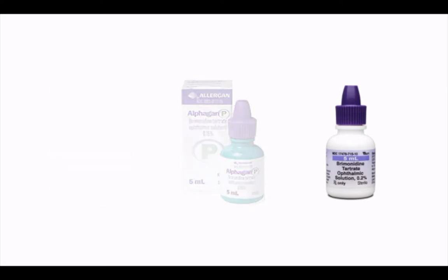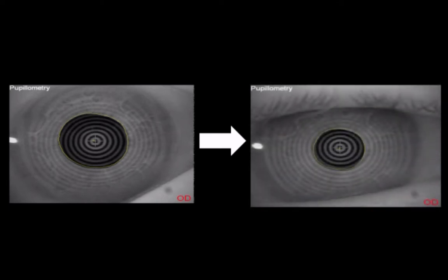Now, this next picture is an example of a patient who had infrared pupil measurements performed before the installation of brimonidine and then after the installation of brimonidine. It is clear to see that the inhibition of pupil dilation that occurs and it's remarkably effective.